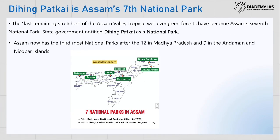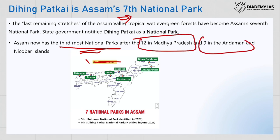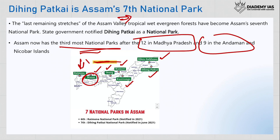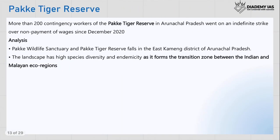Next is the Dihang Patakai National Park — it is Assam's seventh national park, recently announced. Assam now has the third most national parks after Madhya Pradesh (12 national parks) and Andaman and Nicobar Islands (9 national parks). National parks in Assam include Raimona, Manas, Orang, Nameri, Kaziranga, Dihang Patakai, and Debruzikawa. Among these, Manas and Kaziranga are UNESCO World Heritage Sites, and Dihang Patakai is a major elephant reserve.